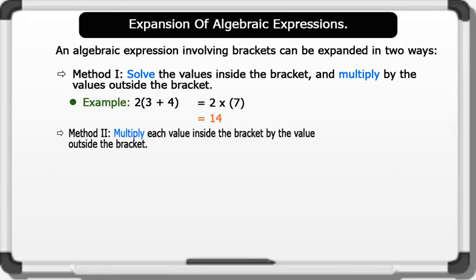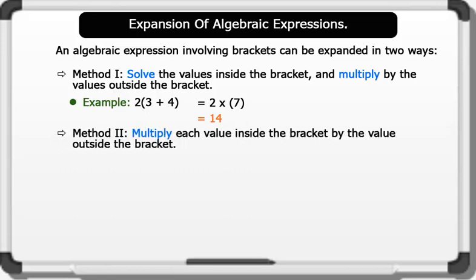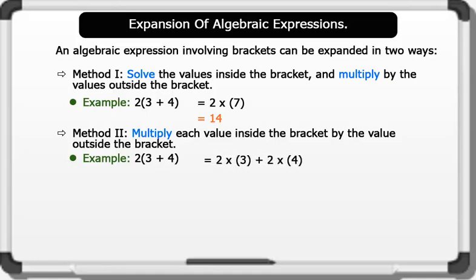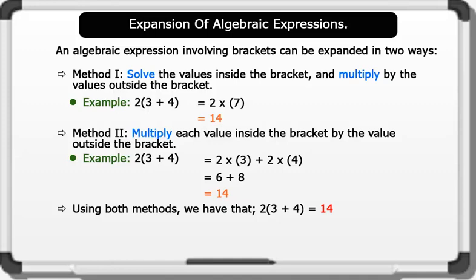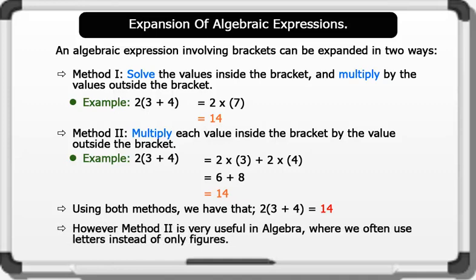Method 2: multiply each value inside the bracket by the value outside the bracket. Example: 2 bracket 3 plus 4 gives us 2 times 3 plus 2 times 4, equals 6 plus 8, equals 14. Using both methods, 2(3 + 4) equals 14. However, Method 2 is very useful in algebra where we often use letters instead of only figures.